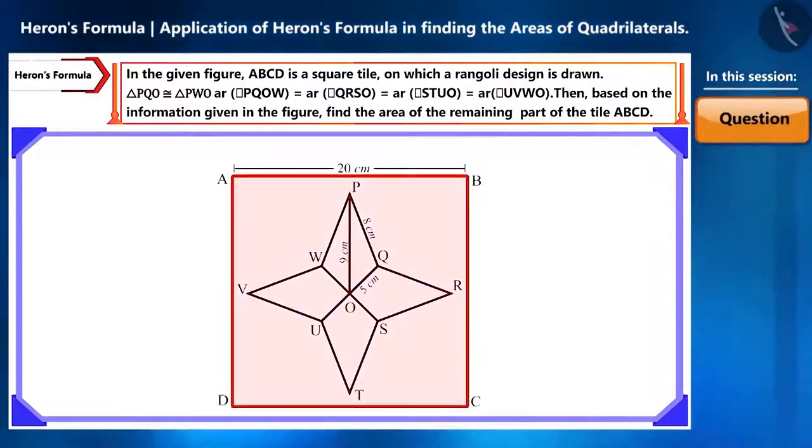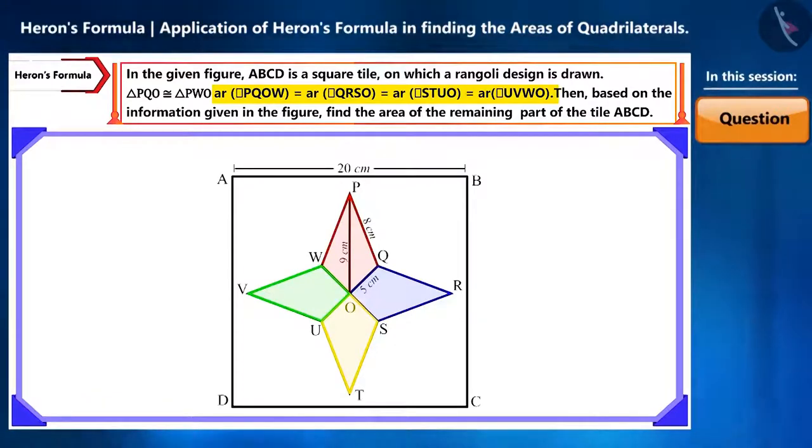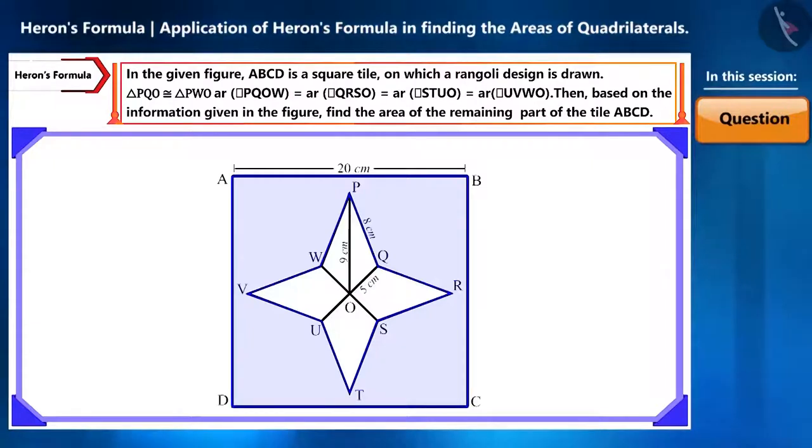In the given figure, ABCD is a square tile on which a rangoli design is created, in which triangle PQO and triangle PWO are congruent, and the areas of these four quadrilaterals are equal. Now, based on the information given in the figure, find the area of the remaining part of the tile ABCD.